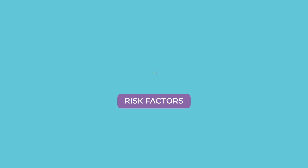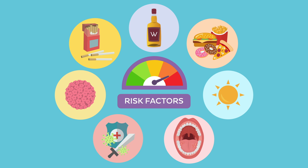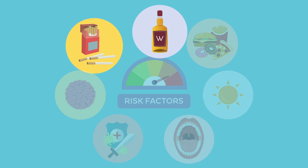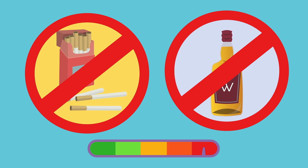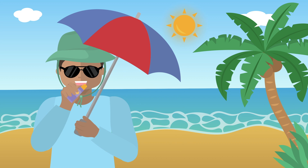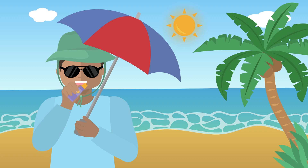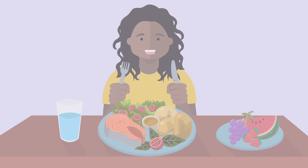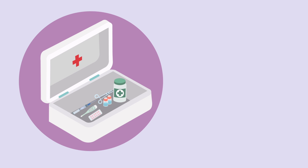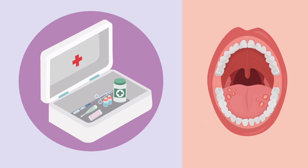Knowing the risk factors makes it easy to understand what we can do to prevent the disease. Since tobacco and alcohol are big risk factors, avoiding their consumption is an important form of prevention. Reducing sun exposure and using sun blocks on the lips can also decrease the chances of developing oral cancer, as well as having a healthy diet and appropriately managing any chronic diseases of the mouth or immune conditions.